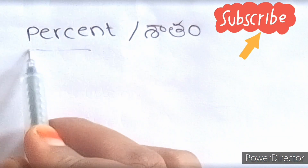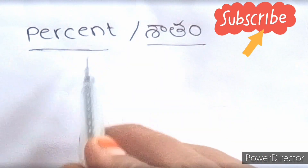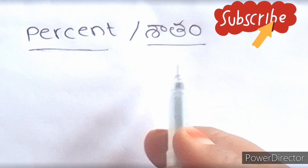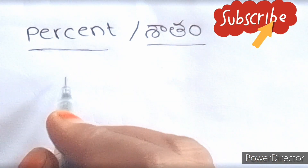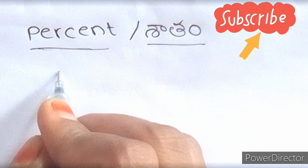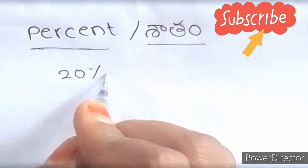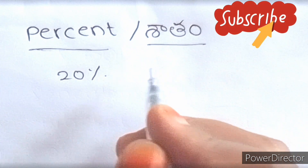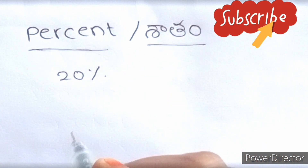Percent — 'Shatam' — this word is very common in daily life. You see it in shops: 10% discount, 20% discount. You can also find it in marks and pass percentage. Percentage is a very important topic in competitive exams.